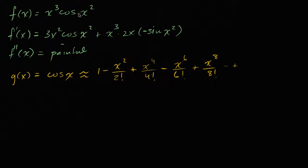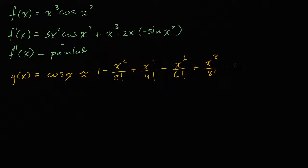We wanted the first five terms of our original function, so bear with me — we'll see how this cosine series is going to be useful. Now that I've given you a reminder of the Maclaurin series for cosine of x, the hint is: can we use this to find the Maclaurin series for our original function right up here? Notice that f of x is just x to the third times g of x squared. That's a sizable hint — I encourage you to pause and try to work through it.